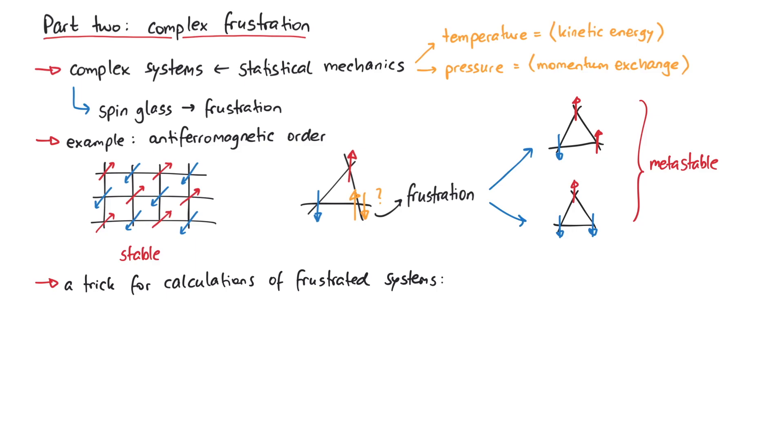Giorgio Parisi studied such systems using the replica trick, and introduced a new parameter, the overlap q alpha beta. Here, alpha and beta denote different replicas, that is, two realizations of the same system. The angled brackets denote taking the average, and sigma represents a spin. This overlap q can take on values between minus one and plus one, where plus one means that the replicas alpha and beta are almost the same, minus one means that they are the opposite of each other, and zero means that they are totally unrelated.